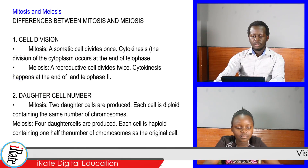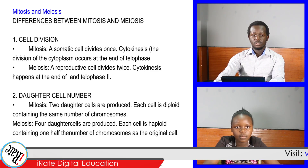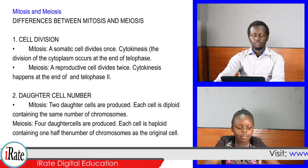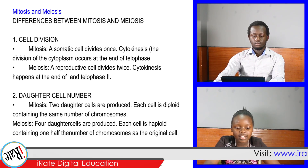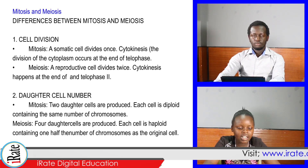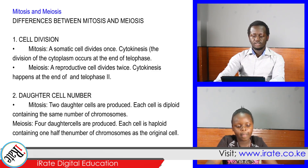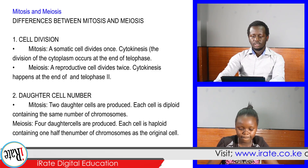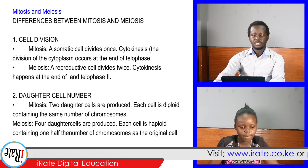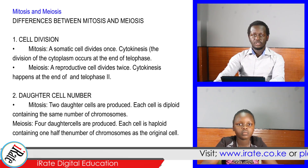Difference between mitosis and meiosis. Point 1: Cell division. In mitosis, a somatic cell divides once; cytokinesis — the division of the cytoplasm — occurs at the end of telophase. In meiosis, a reproductive cell divides twice; cytokinesis happens at the end of telophase II.